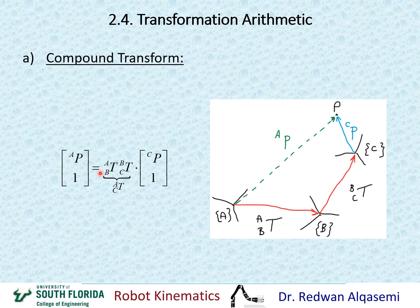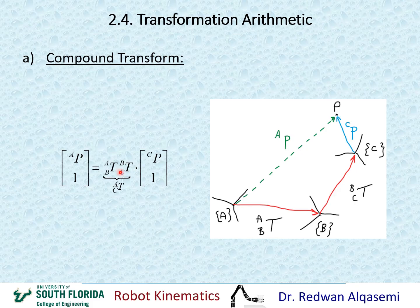This combination of the two transformation matrices gives T of C relative to A. To remember the order of multiplication, think of them as fractions: B cancels with B, C cancels with C, and what's left is A as the result.